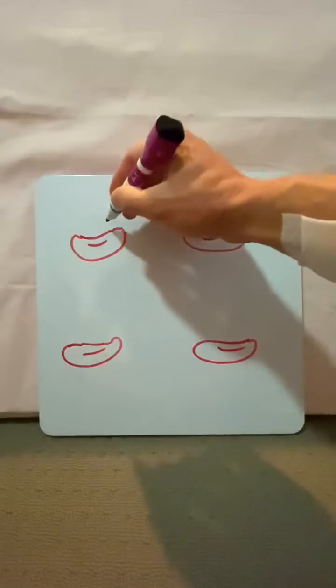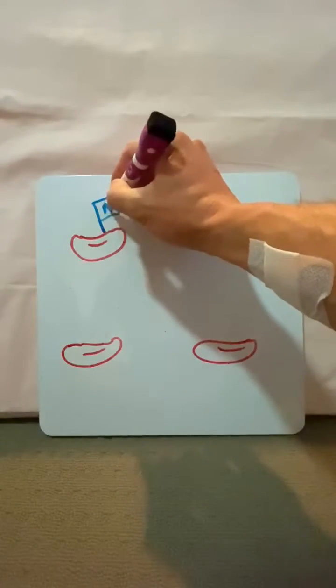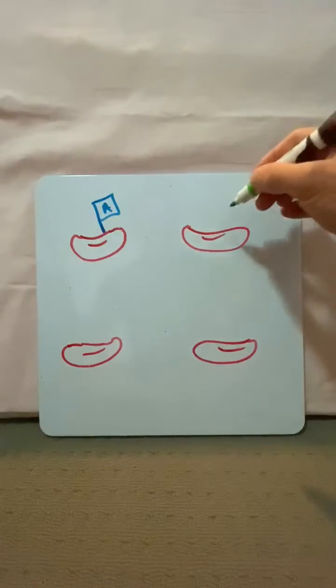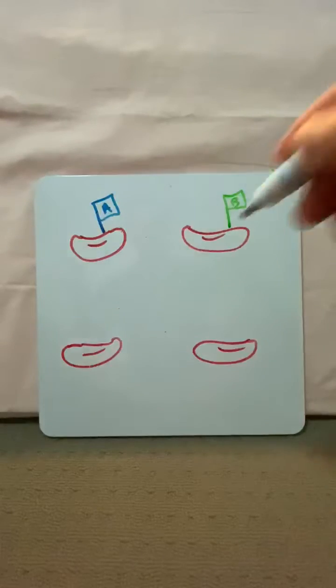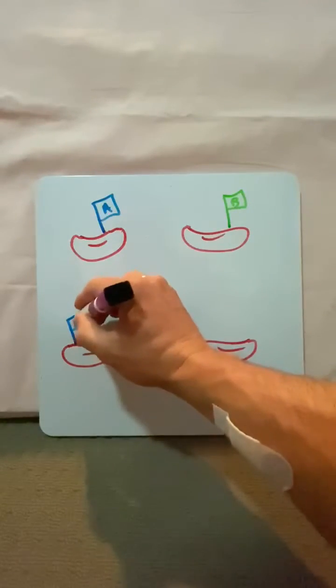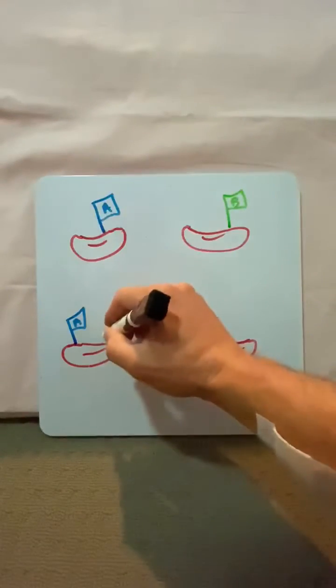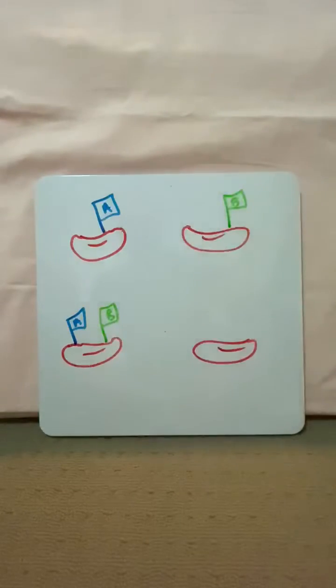Now, some red blood cells are going to have A antigens on their surface, some are going to have B antigens on their surface. Some red blood cells have both A and B antigens on their surface, and some red blood cells don't have any antigens on their surface.